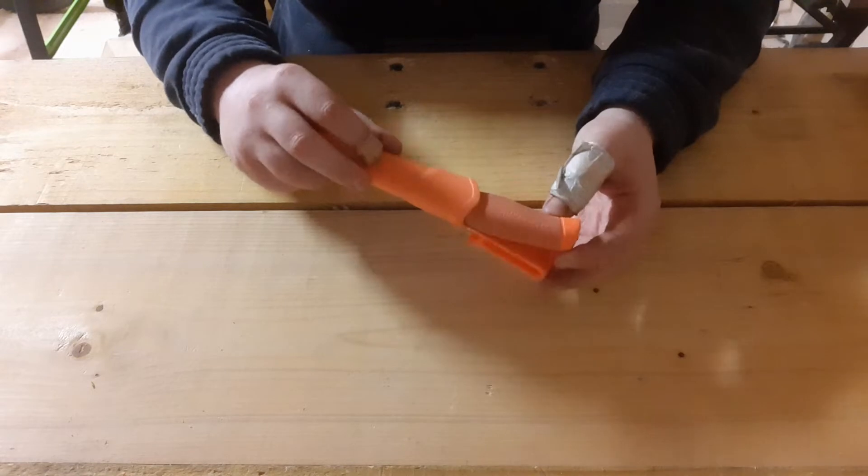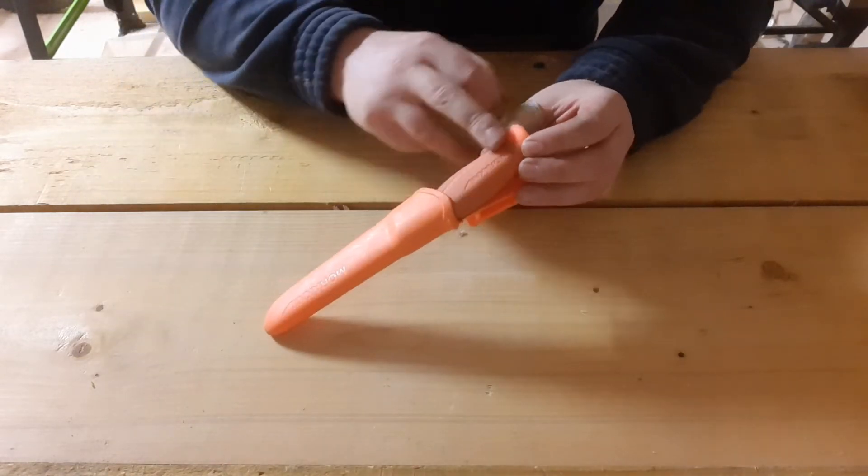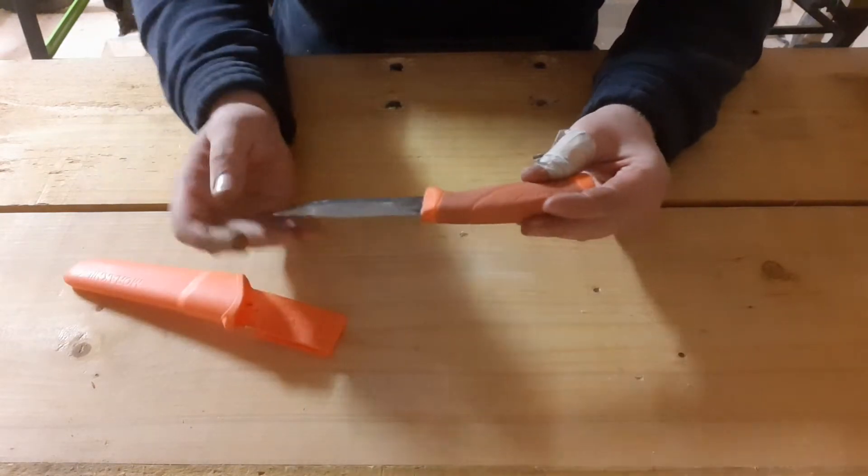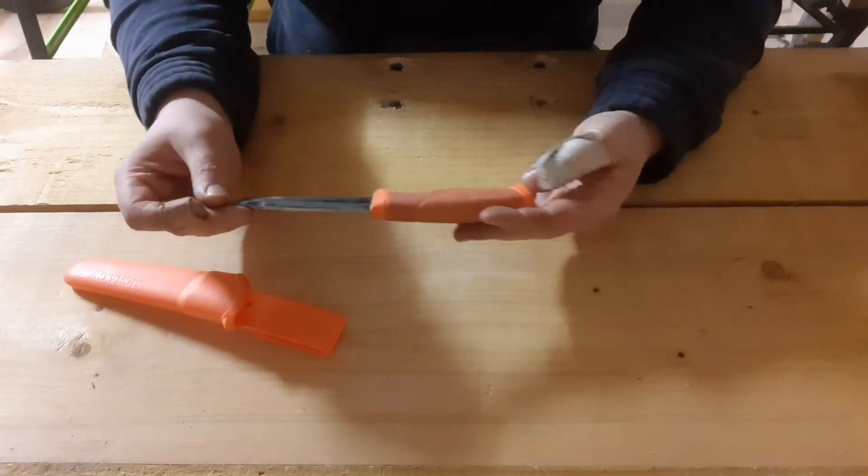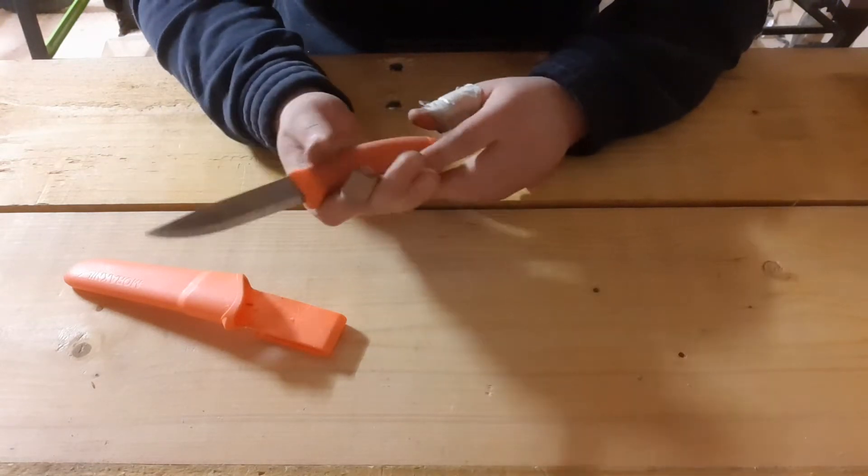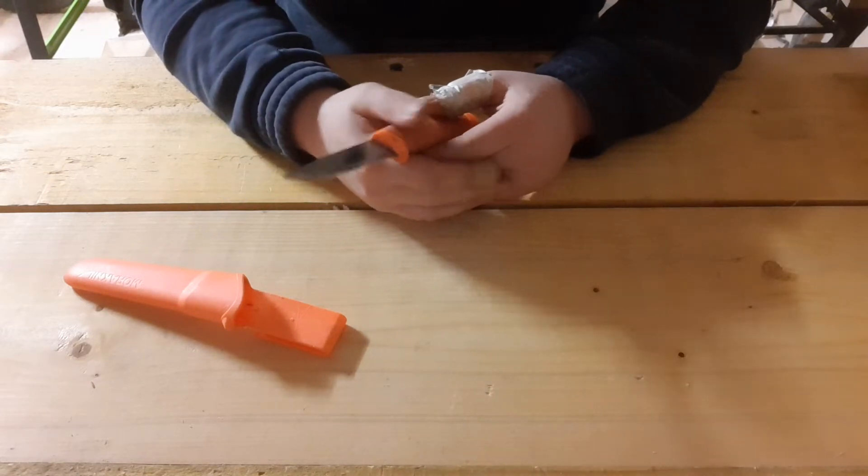So this is actually, I think this is a Mora special edition because you can see the whole handle is orange. Usually this piece here would be black, whereas this one is full orange. Now the handle in the middle is rubberized. Some of the texture is gone because obviously I've had this for like four years, five years maybe.